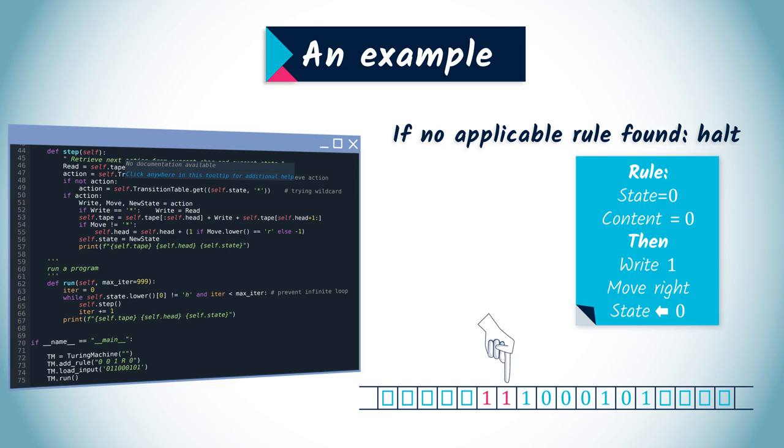The next character is a 1. No rule applies. So the machine halts. The output is then 111000101.